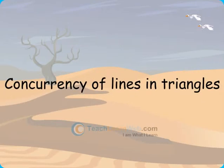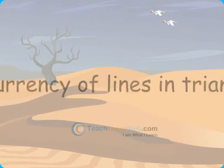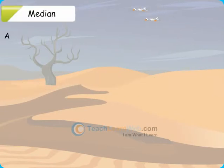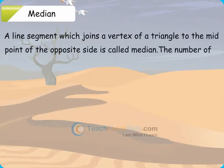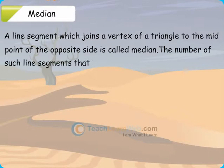Concurrency of Lines in Triangles. Median: A line segment which joins a vertex of a triangle to the midpoint of the opposite side is called median. The number of such line segments that can be drawn in the triangle is 3.